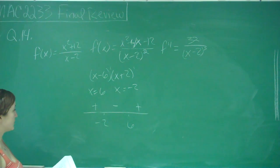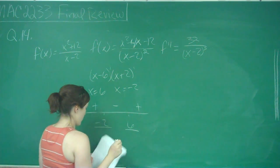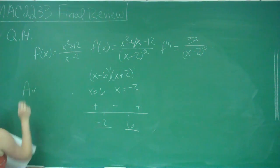And so it is true, f does have a relative maximum at negative 2 and a relative minimum at 6, so A is okay.